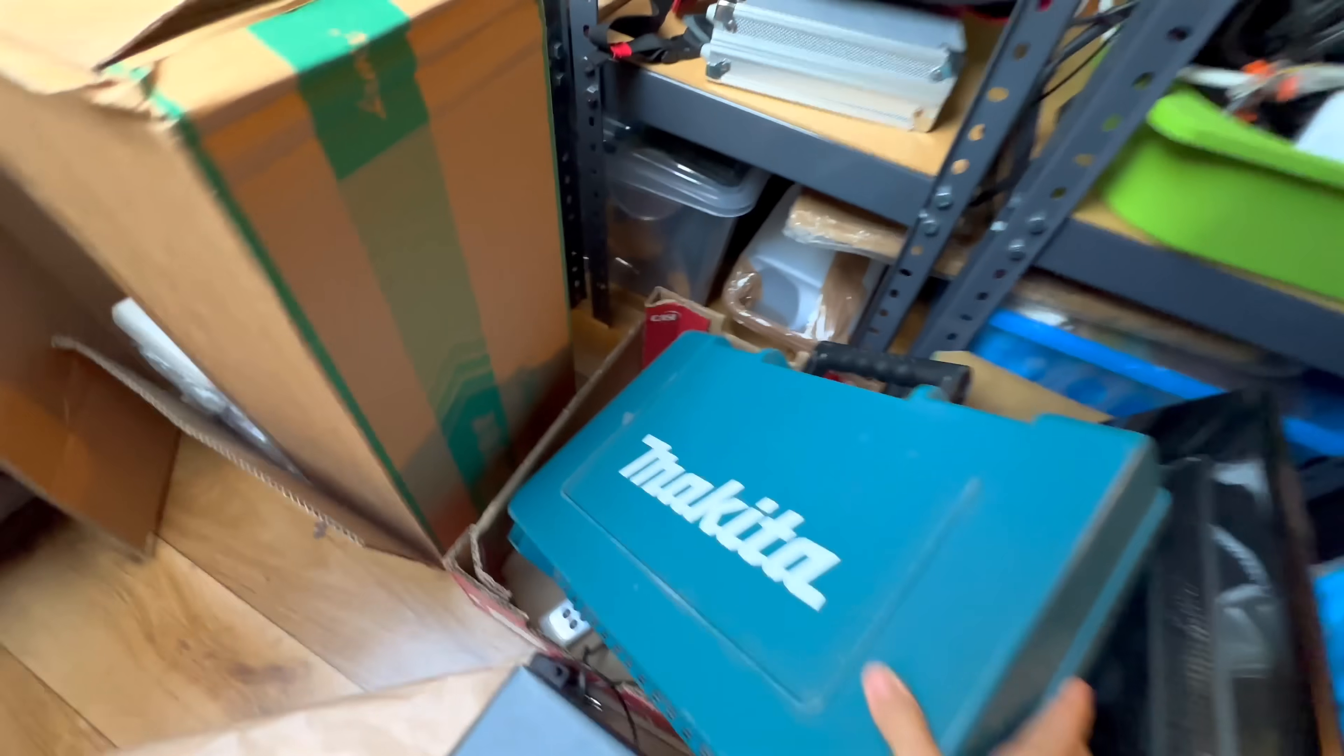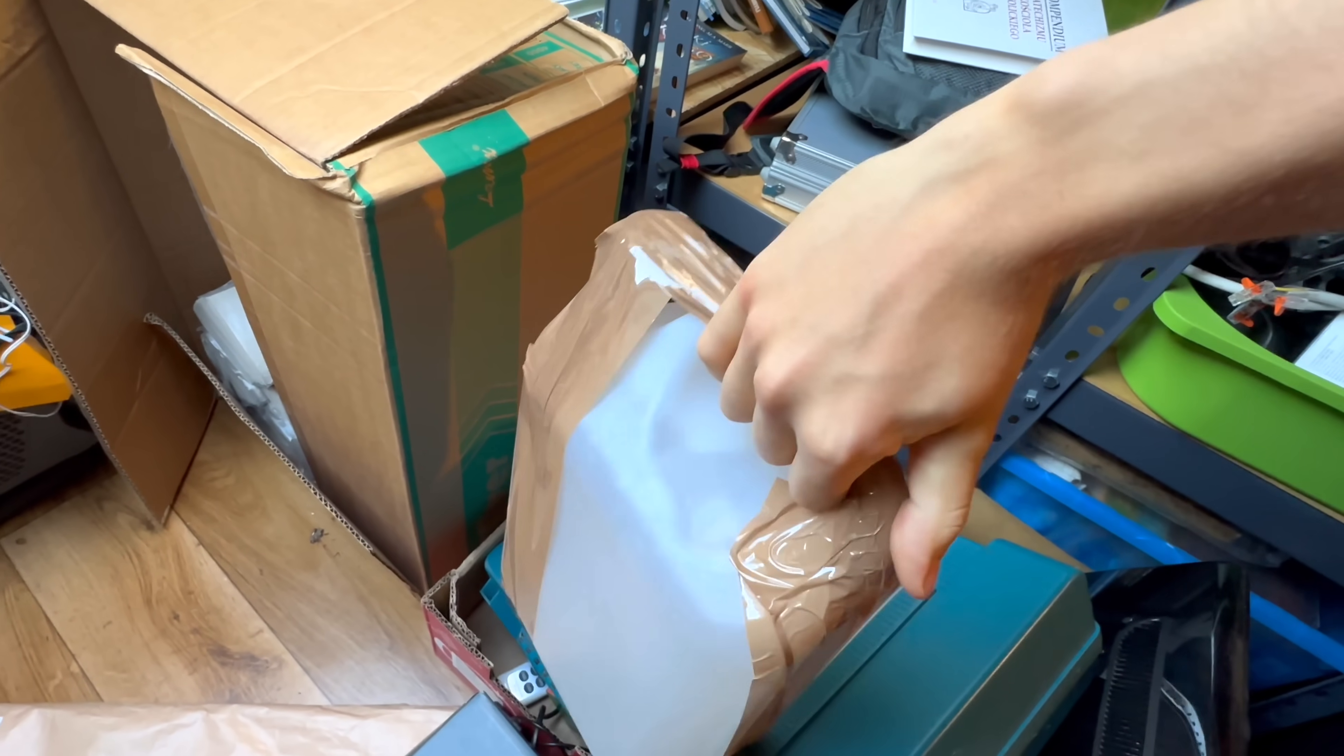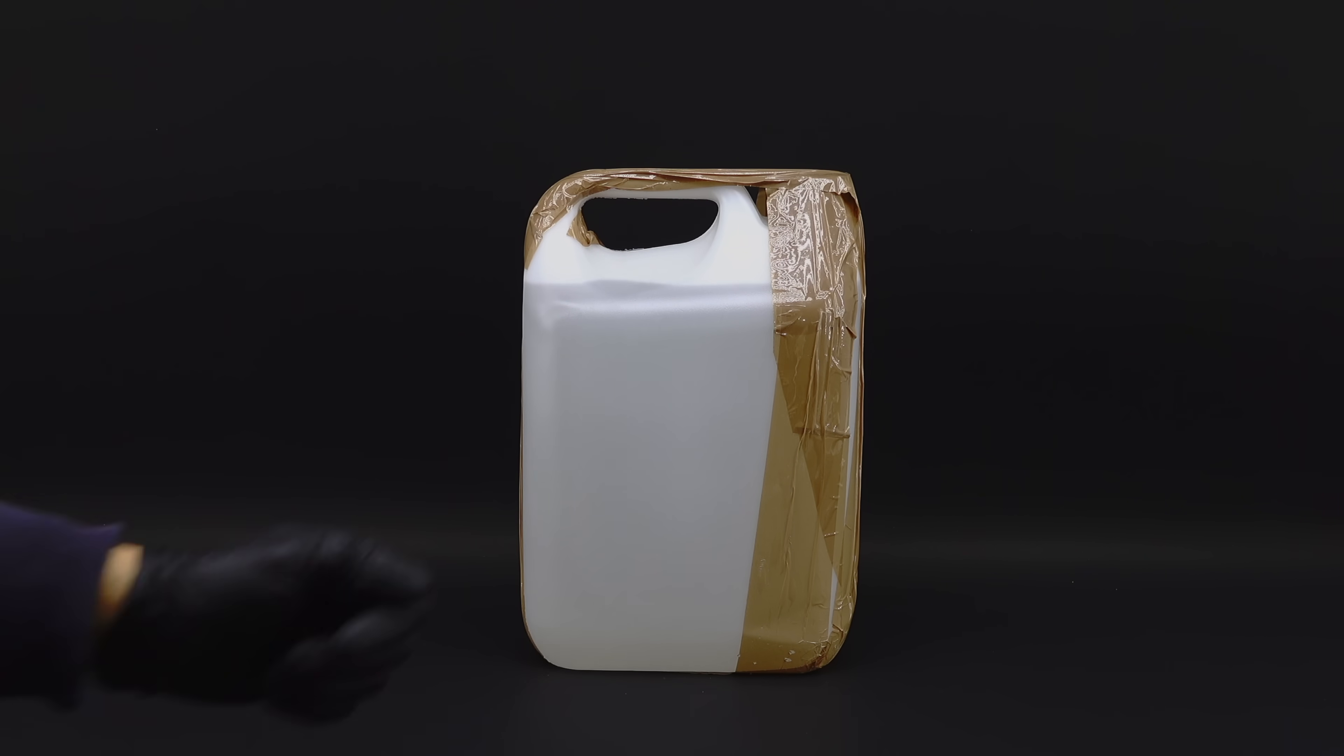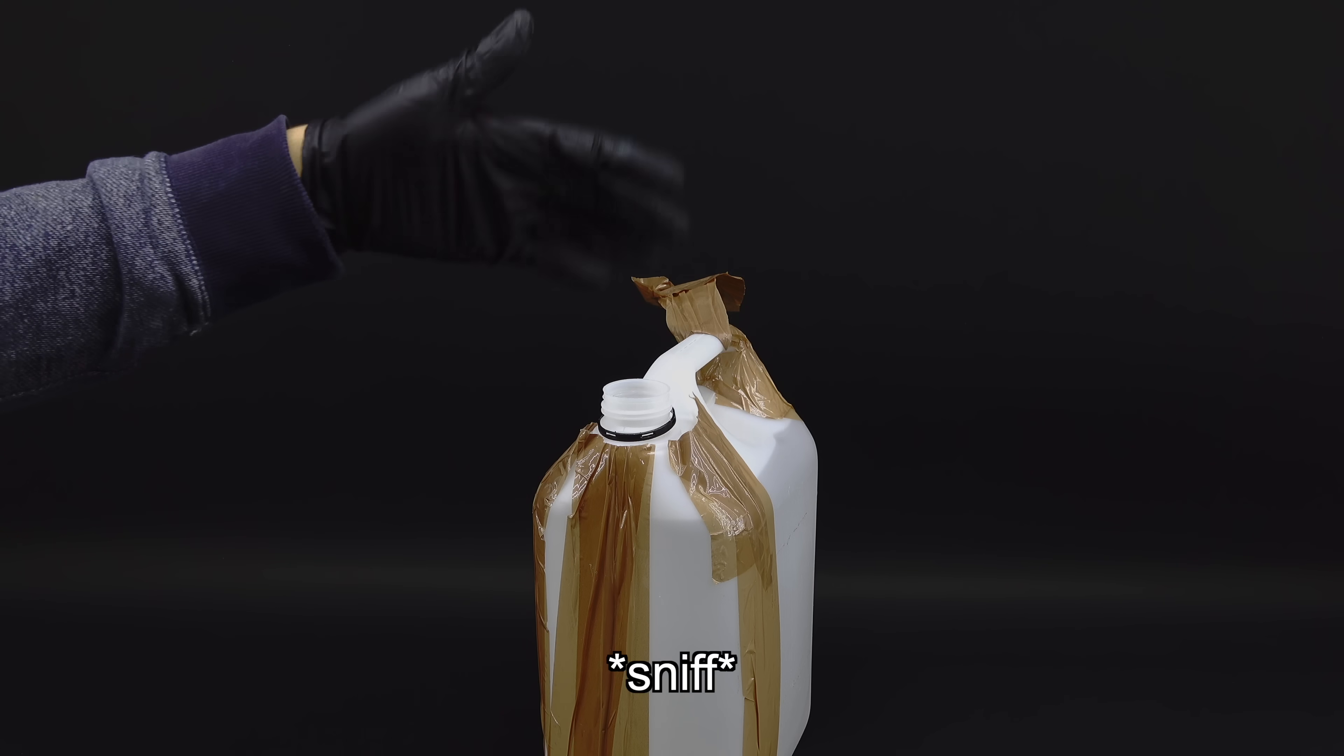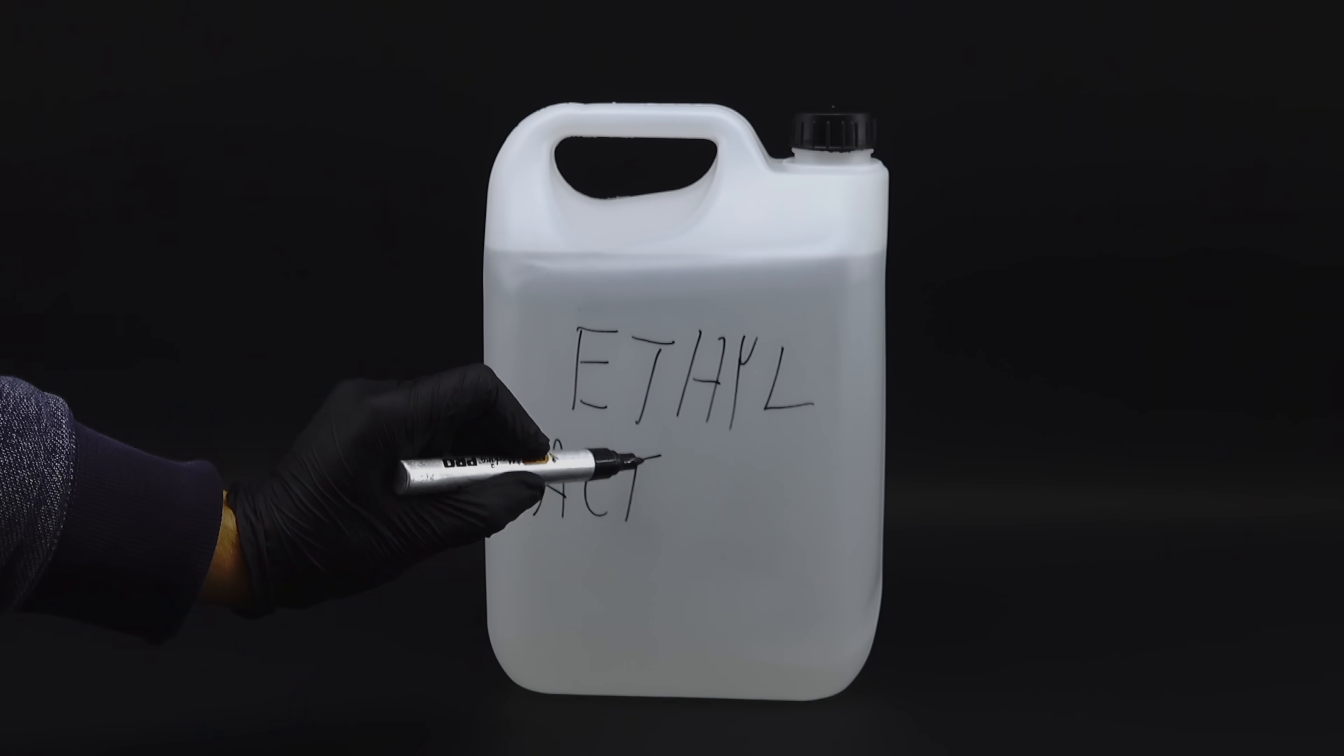This journey started about a year ago when I found this old unlabeled container in my attic. When I asked my dad what this stuff was, he told me it's just some industrial nail polish remover he bought years ago. I wasn't quite satisfied with that answer, since how often do you find 5 liters of a perfectly intact chemical just laying around, so I decided to do a little digging. After a professional smell test and some more technical analysis methods, I deduced that what I have is a chemical called ethyl acetate.